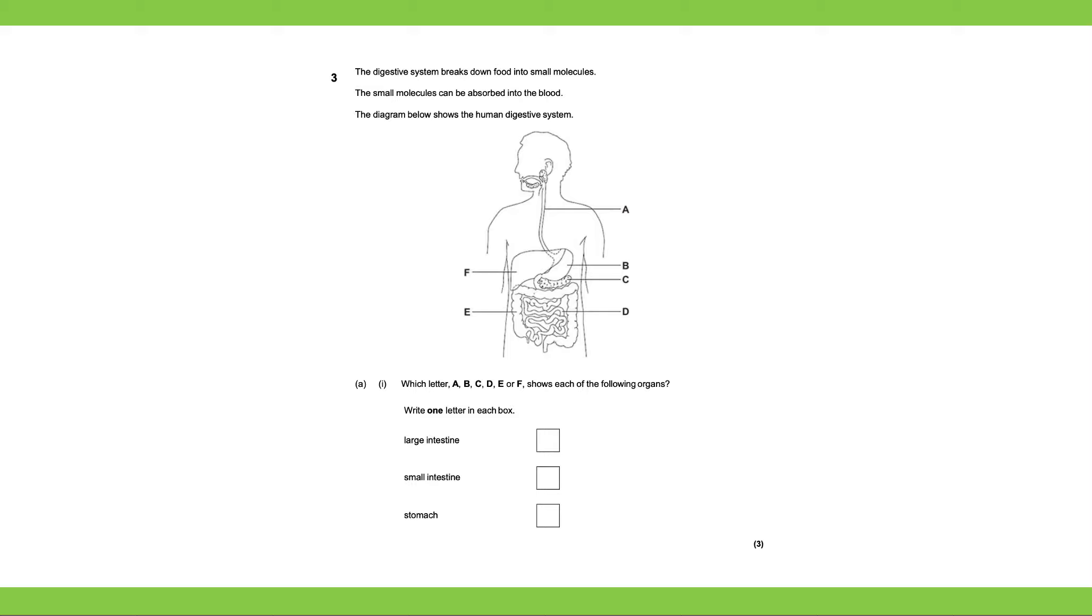So we need to write which one is the large intestine, which one is the small intestine, and which one is the stomach. So first of all, the large intestine is on the outside, and the small intestine is on the inside.